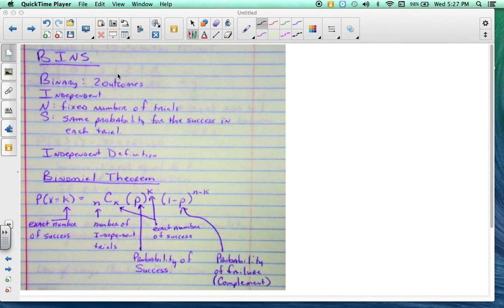So BINS, if it's binomial settings, you need to tell me whether it's binary, two outcomes, yes or no, one or two, zero, or just you need to make sure there's two outcomes. Tell me whether or not it's independent, if each trial is independent.